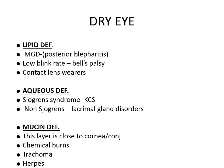The third is mucin layer deficiency. This layer is close to the cornea and conjunctiva. Certain conditions like trachoma, chemical burns, Stevens-Johnson syndrome, and pemphigoid can lead to deficiency of the mucin layer and dryness of the eyes.